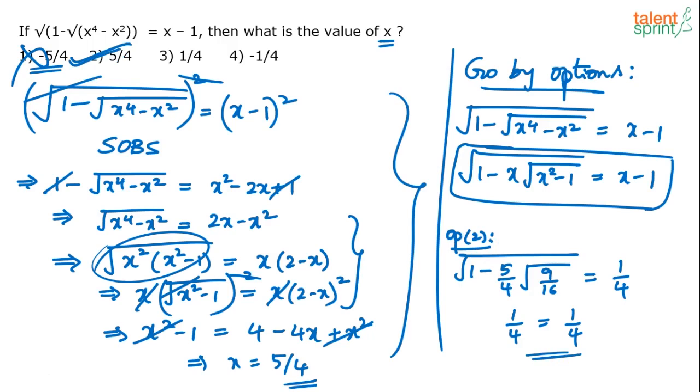Assuming any random value or random substitution will not help. You can either go by the options or simplify straight.